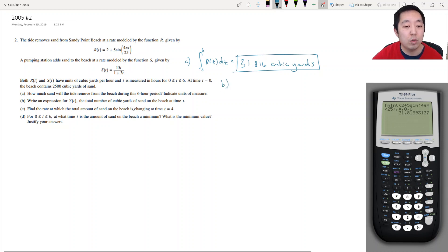Write an expression Y of T for the total number of cubic yards of sand at the beach at time T. Well, Y of T is how much sand we add, which is S of T, minus how much we take away. This is the rate of change of the amount of sand because I am adding in S of T and subtracting R of T. So this is how much sand we have added or subtracted.